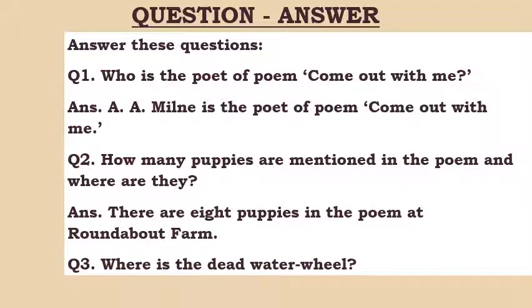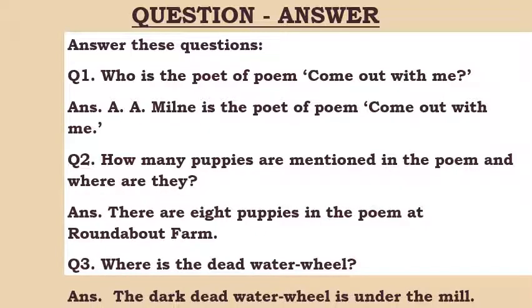Question 3: Where is the dead water wheel? In the poem, there is a mention of a dead water wheel, and the boy was very upset that everybody knew about that wheel but no one cared about his feelings. The answer is: the dead water wheel is under the mill.